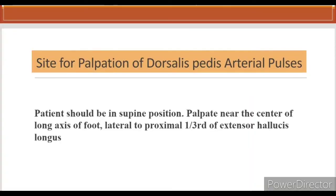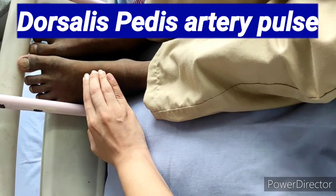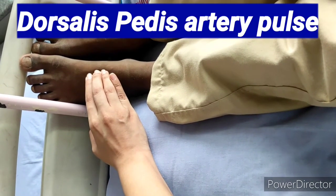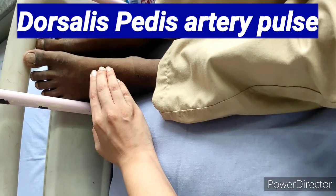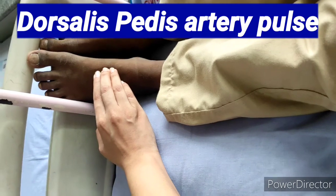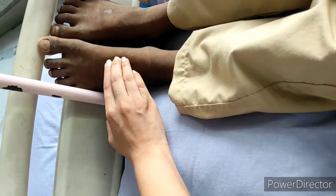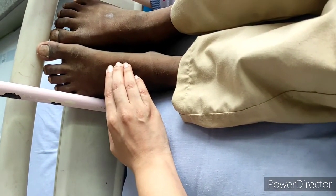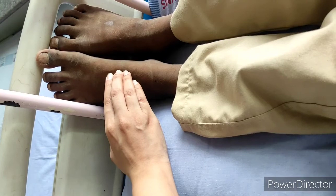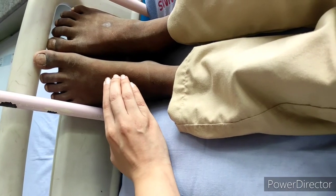For palpation of the dorsalis pedis artery, the patient should be in supine position and we palpate near the center of the long axis of the foot, lateral to the proximal one-third of the extensor hallucis tendon. In this video you can see I am palpating the dorsalis pedis artery just lateral to the proximal one-third of the extensor hallucis tendon.